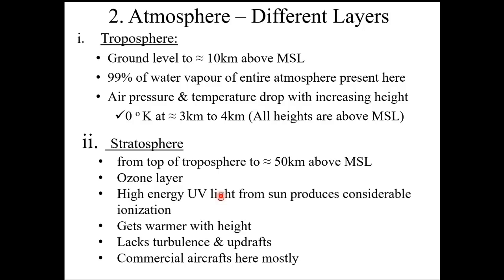To understand the various things, we will first of all see the various atmospheric layers. The first layer in which we are all there, ground level to approximately 10 km above mean sea level, is known as the troposphere. 99% of the water vapour of the entire atmosphere is present in this region — almost the whole lot is present here.